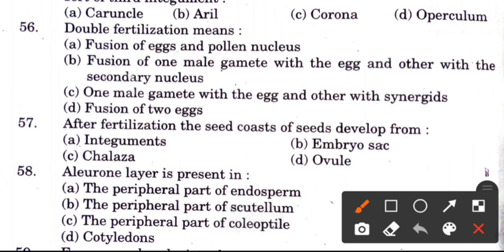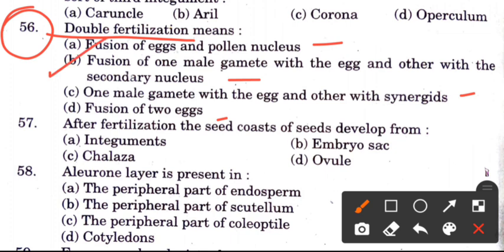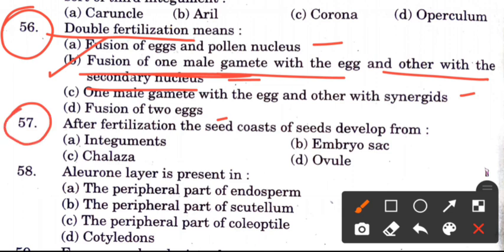Question 56: Double fertilization means — options are fission of egg and pollen nucleus, or fusion of one male gamete with the egg and the other with the secondary nucleus, or fusion of two polar nuclei. The answer is B: one male gamete fuses with the egg and the other fuses with the secondary nucleus.